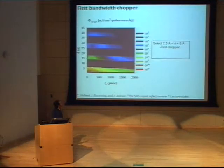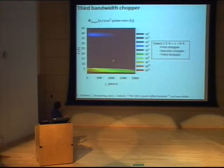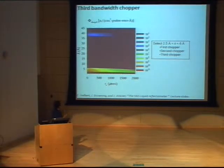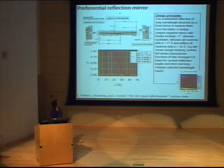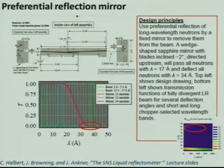To achieve the required small range of lambdas, they have three choppers in series. The first chopper cuts out most of the spectrum from the source, the second chopper cuts out more, and the third chopper cleans it up a bit. However, some intensity remains at the high-lambda range, so to get rid of that they use a preferential reflection mirror. This mirror lets any wavelength smaller than 17 angstroms pass through and reflects the larger wavelengths, eliminating the high-lambda intensity.